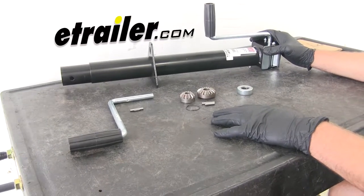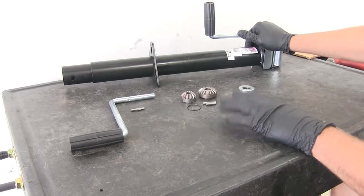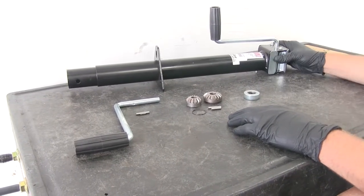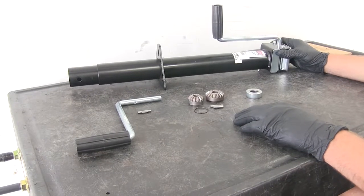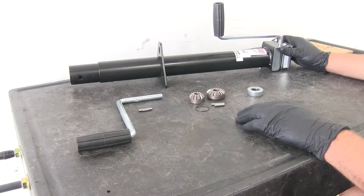Today we're going to be taking a look at the complete rebuild process for the 5000 wind A-frame style trailer jack. This is going to be a side wind with metal cap. This is part number TJA-5000S-B.